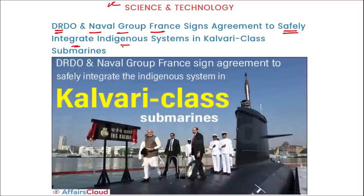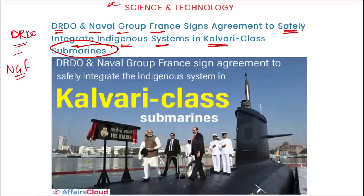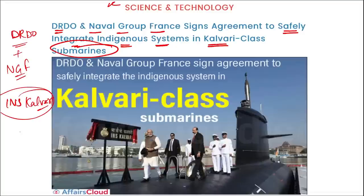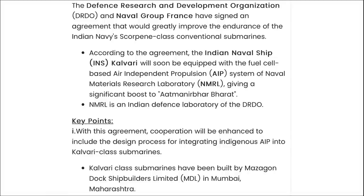DRDO and Naval Group France signed an agreement to safely integrate indigenous systems in Kalvari class submarines. They will improve the endurance of Indian Navy Scorpene class conventional submarines. Per the agreement, INS Kalvari class submarines will soon be equipped with a fuel cell-based Air Independent Propulsion (AIP) system from the Naval Materials Research Laboratory (NMRL). Kalvari class submarines have been built by Mazagon Dock Shipbuilders Limited in Mumbai, Maharashtra.